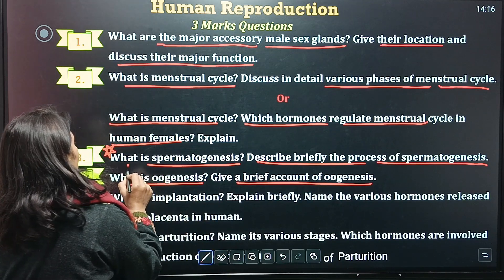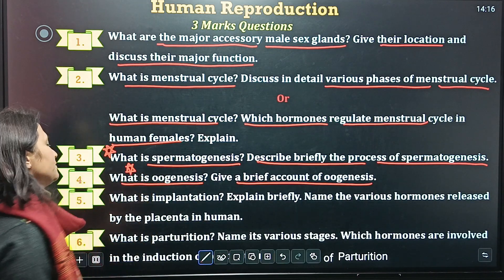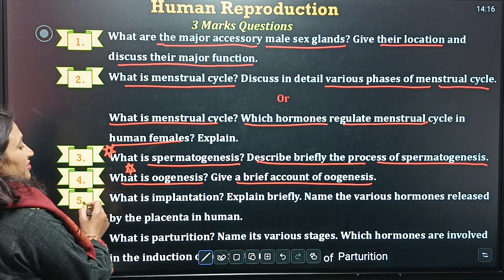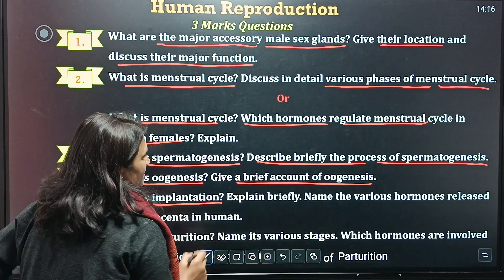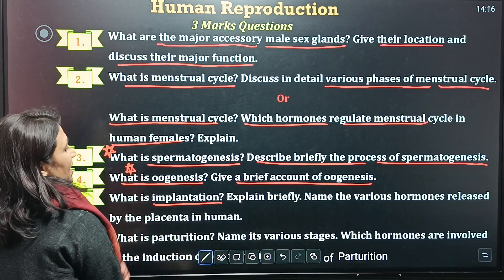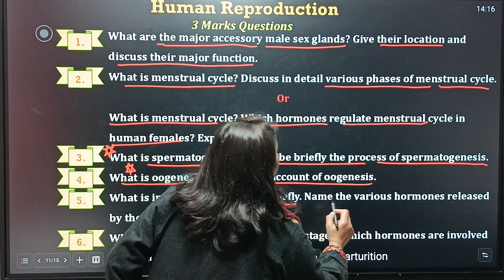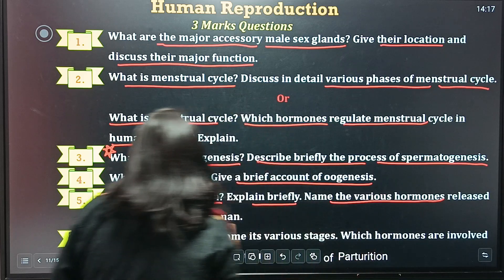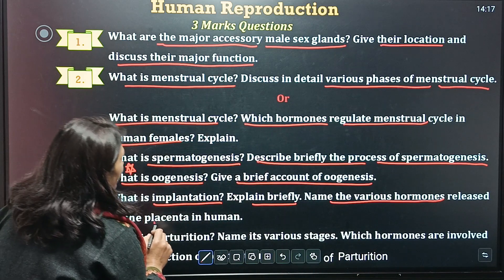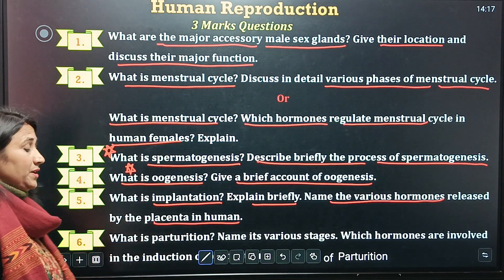This is also one of the most important questions. Question number 5: what is implantation? Explain briefly and name the various hormones released via the placenta in humans.